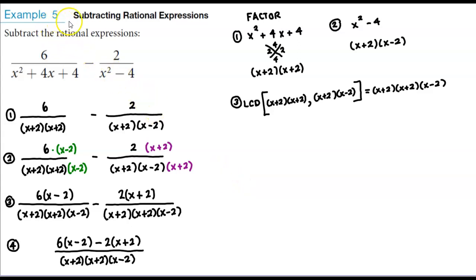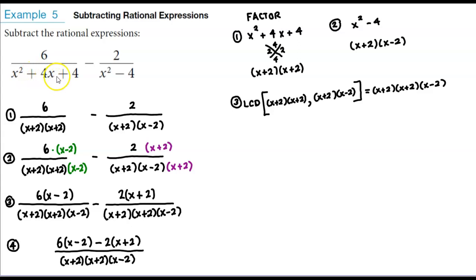In example number five, we're subtracting rational expressions. We have 6 divided by x squared plus 4x plus 4, minus 2 over x squared minus 4.